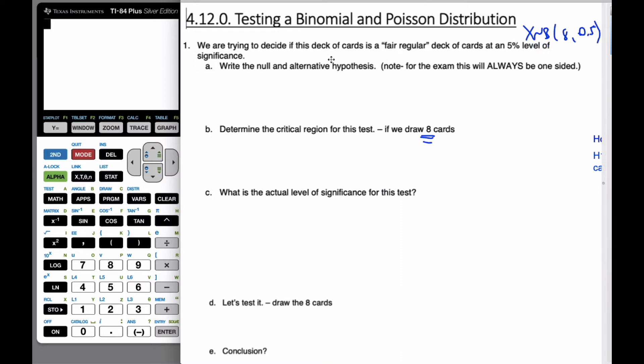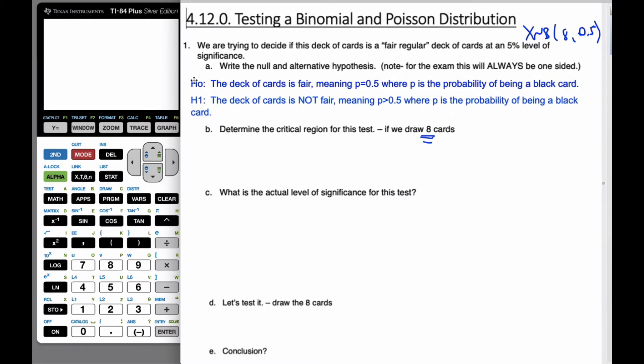So our null and alternative hypothesis is we are going to consider this, where p is probably pulling a black card. So the deck of cards meaning we have the probability of pulling a black card is 50%. The deck of card is not fair meaning it's going to be more than 5%.